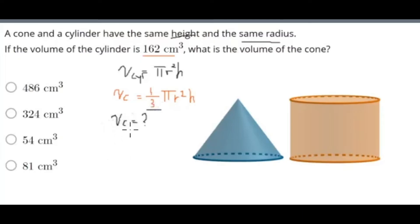So to find the volume of my cone, all I have to do is do 1/3 times the volume of my cylinder, which is 162 centimeters cubed. And if we do that, we get 54 centimeters cubed. And therefore, the answer is here, and this is our answer.